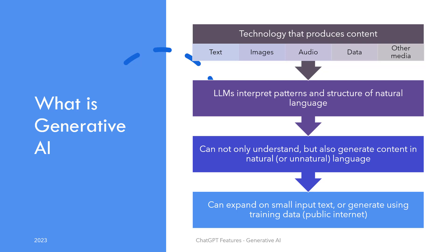Language models like ChatGPT, which are trained on large volumes of data, can add information by themselves to a smaller piece of text, or draw from their own training data — which is the public internet — to expand or generate new content as per instructions.